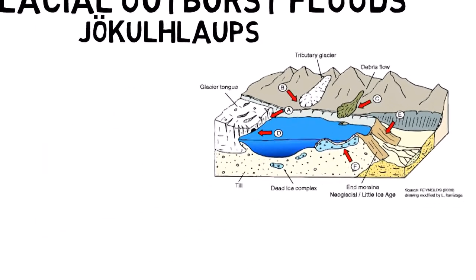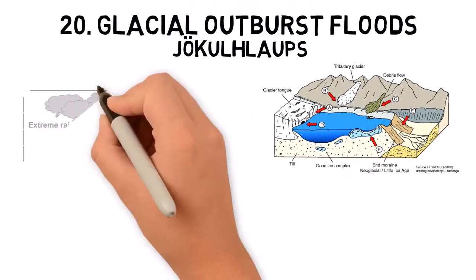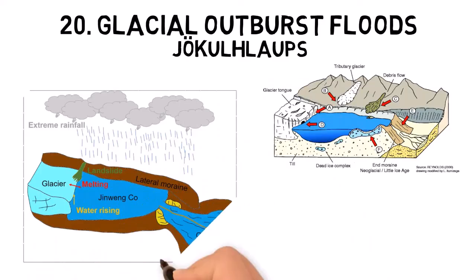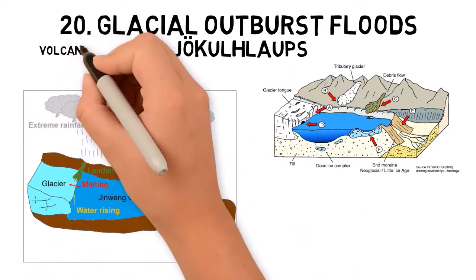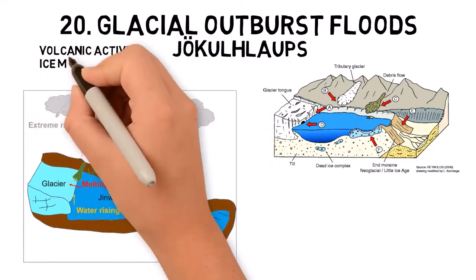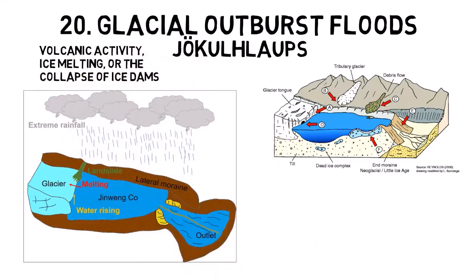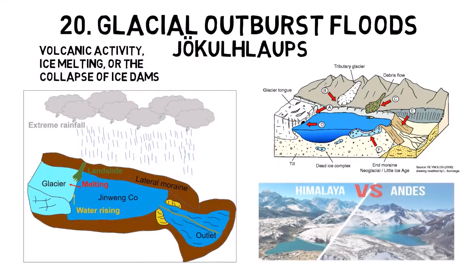These floods can cause significant downstream flooding and destruction. They are often triggered by volcanic activity, ice melting, or the collapse of ice dams. Glacial outburst floods are common in regions with large glaciers, such as Iceland, the Himalayas, and the Andes.